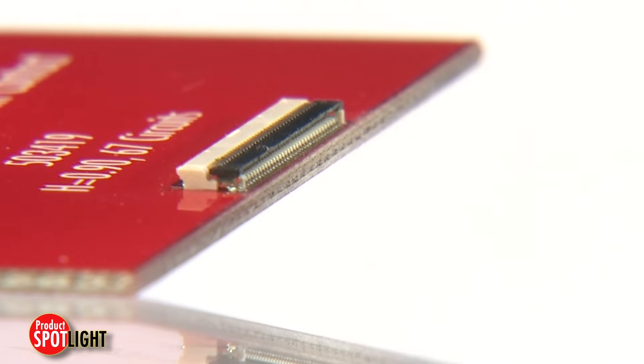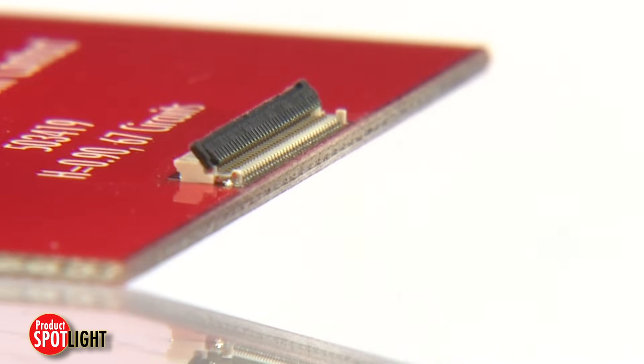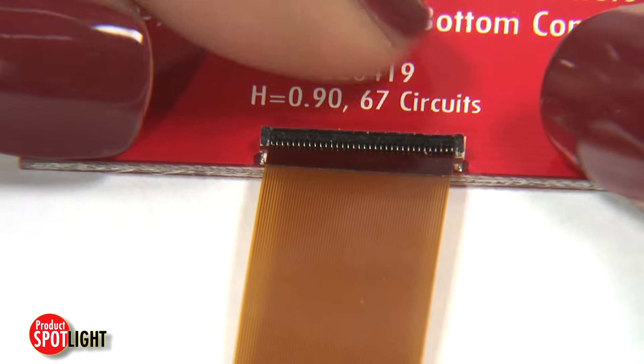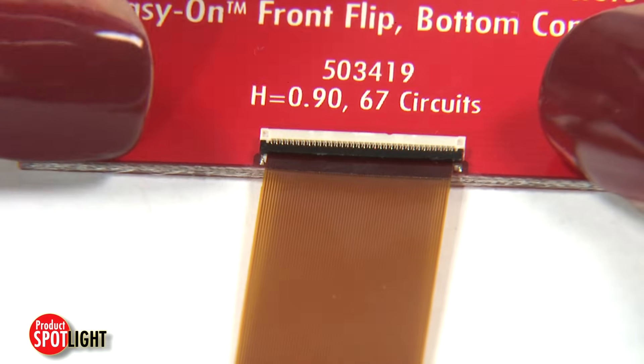Molex's robust easy-on actuator design rotates 130 degrees when opened for easy cable placement and is easy for operators to rotate and lock down.